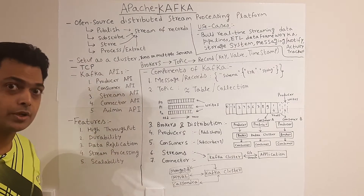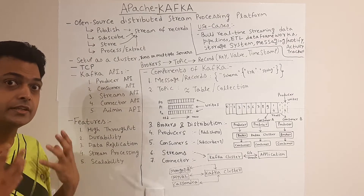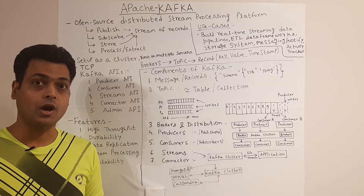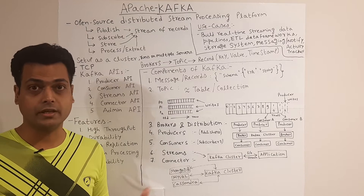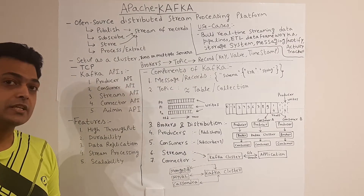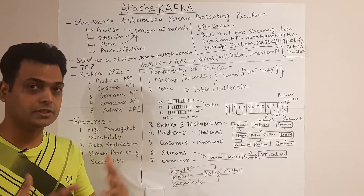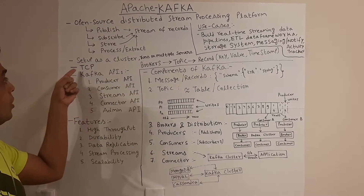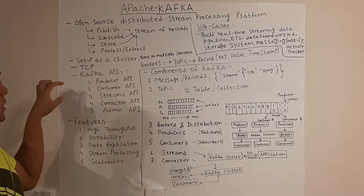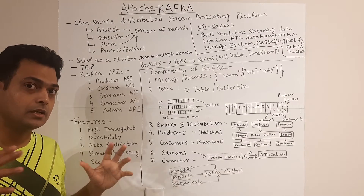You can subscribe to records, store real-time data, process and extract real-time incoming or outgoing data, and take decisions based on how the real-time data is shaping up. Apache Kafka is basically set up on a cluster — it runs on multiple servers, it's a distributed system, and it works on TCP. The communication is done over TCP, so it is reliable.